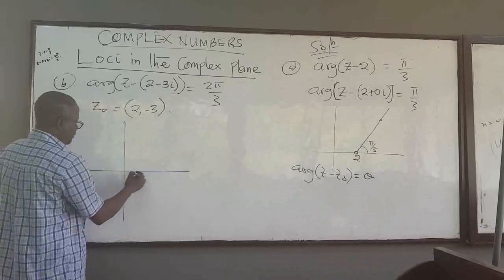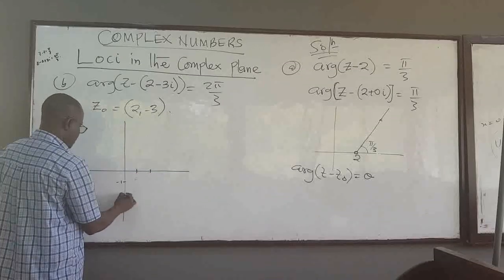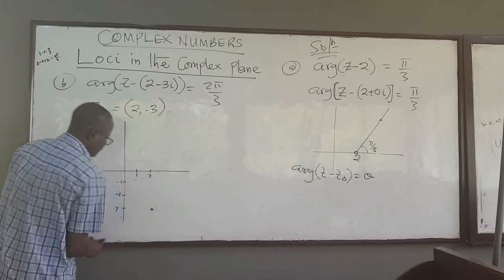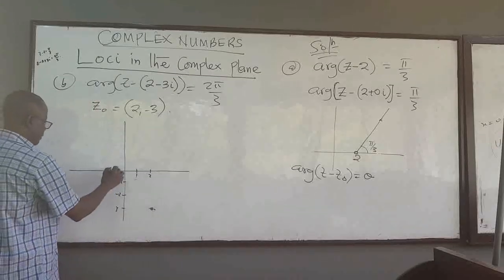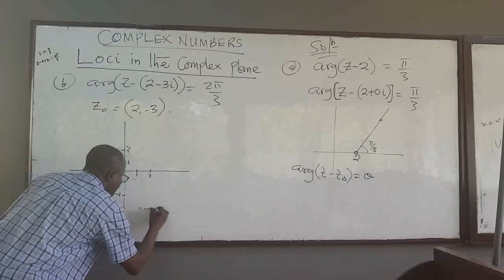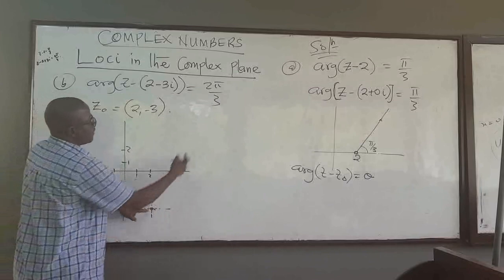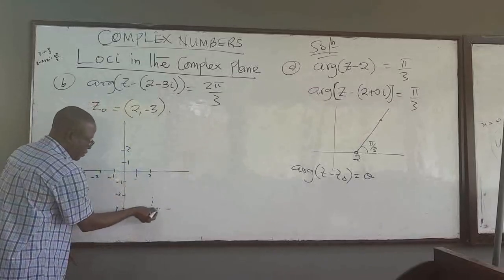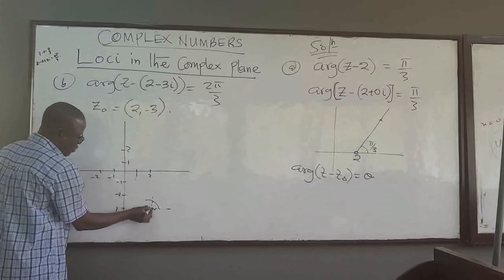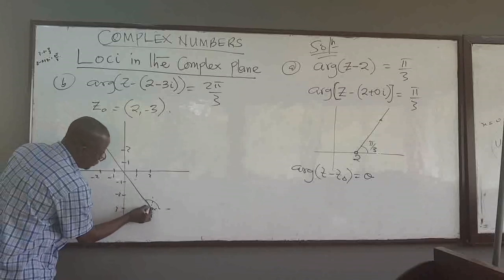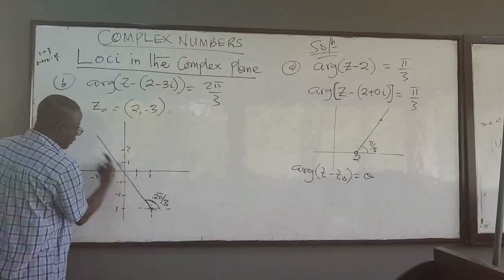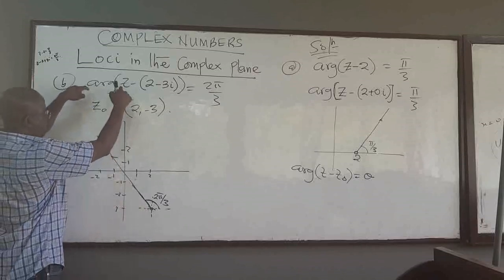So we locate the point (2, negative 3) on the complex plane. From there, we draw a ray making an angle of 2pi over 3 — that is 120 degrees — from the positive x-axis. So from this point, we measure 120 degrees (2pi over 3) and move along that direction. This angle here is 2pi over 3, and the half line goes in that direction.